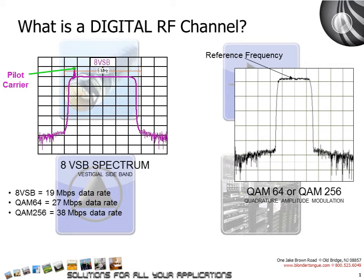8VSB is the digital format for off-air channels and QAM is the digital format for CATV channels. An 8VSB channel can contain about 19 Mbps of programming data, while a QAM carrier can contain 27 Mbps or 38 Mbps, depending on the QAM format.